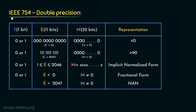Coming to IEEE 754 double precision, it is of 64 bits — simply double the single precision. In case of double precision, the bit organization is as follows: the sign bit is 1 bit, the biased exponent is 11 bits, and the mantissa is 52 bits. The different representations are almost similar to IEEE 754 single precision; the only differences are in the exponent bias and the number of bits.